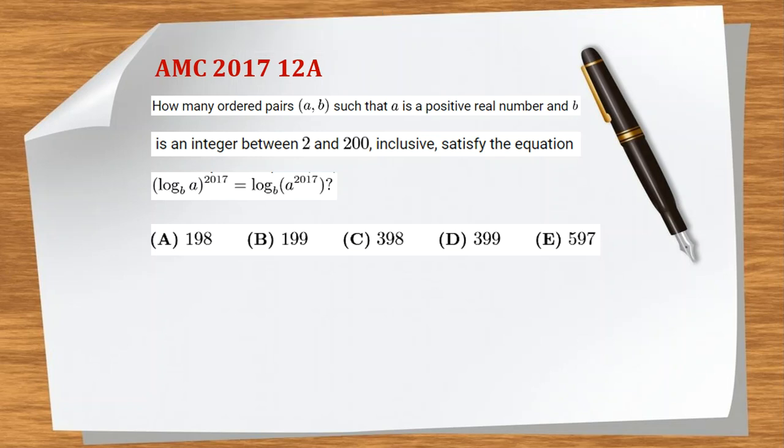AMC 2017 12A: How many ordered pairs (a, b) such that a is a positive real number and b is an integer between 2 and 200 inclusive, satisfy the equation log_b(a^2017) = log_b(a)^2017?